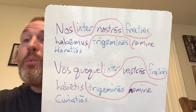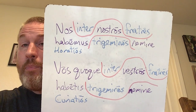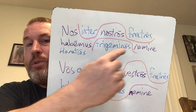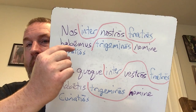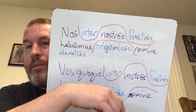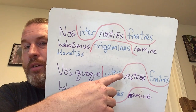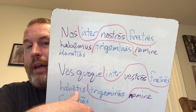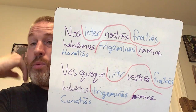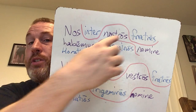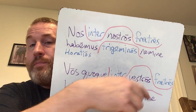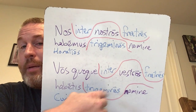Now it gets even more fun. The word inter means 'among.' So what I did was I drew lines. The word nos, nostros, habemus nomine — 'we have among ours named something.' Y'all also, y'all have something named. Now 'among' is also the word 'between.' So what words are among all these things? Triplet brothers named the Horatii. Triplet brothers named the Curiatii.